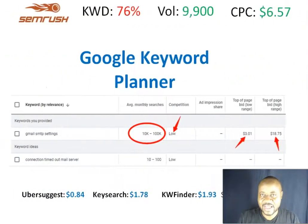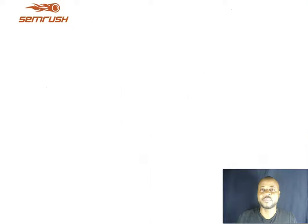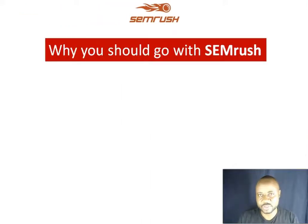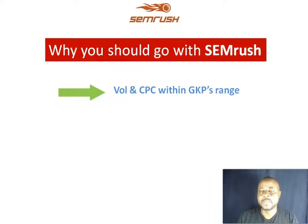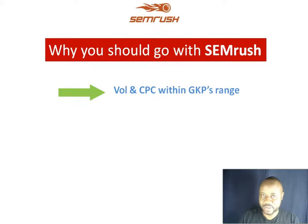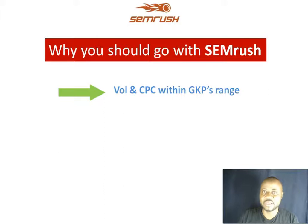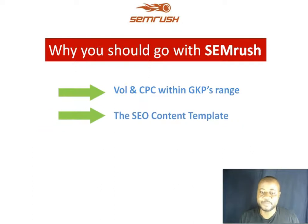We have chosen to go with SEMrush for a couple of reasons. Number one, the search volume and cost per click for that specific keyword and period are all within Google Keyword Planner's range. That means SEMrush is closer to being accurate. There are more reasons pushing us to select SEMrush as our SEO and digital marketing tool.